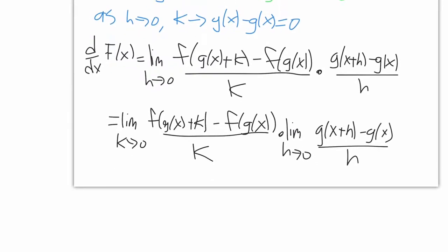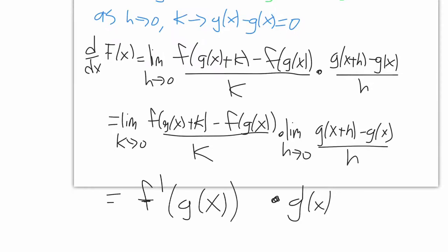We're finally able to recognize what we have in terms of derivatives. This second term is clearly g prime of x. Now this first term actually looks like a derivative — normally we use h, but here we have k, which is fine. It looks like f of x plus k minus f of x over k, but instead of x it's g of x. So what we have is the derivative of f evaluated at g of x, which finishes the proof of the chain rule.